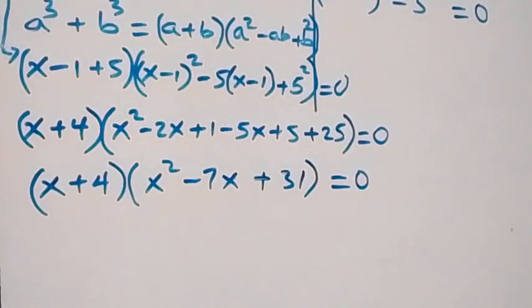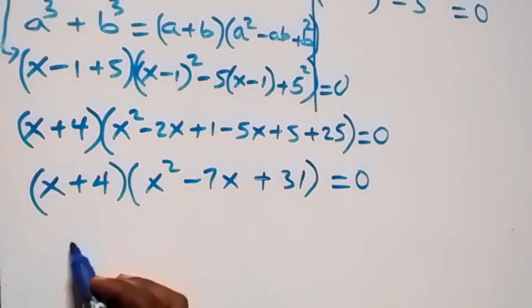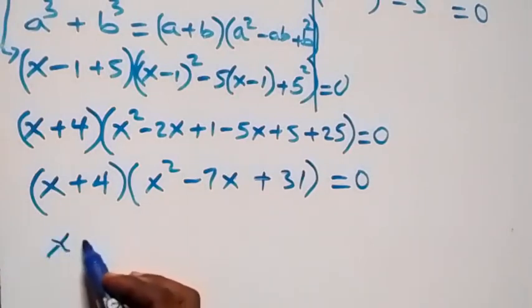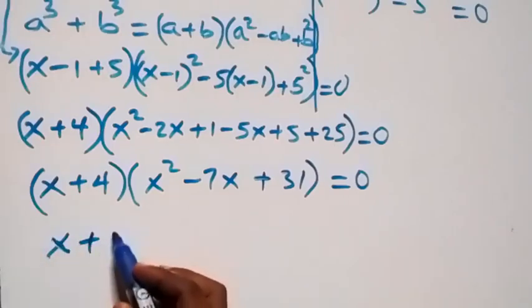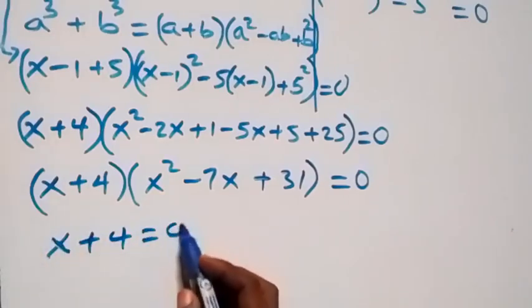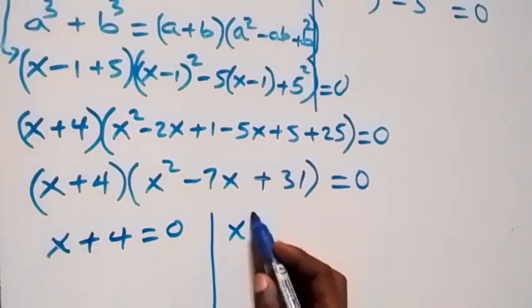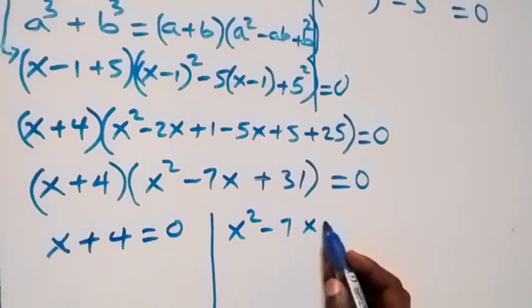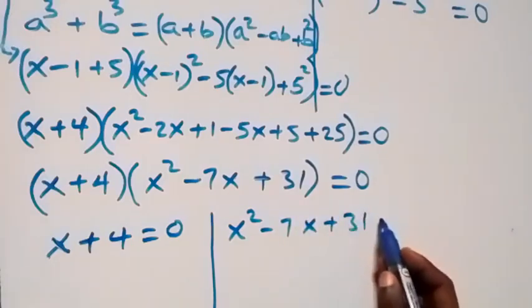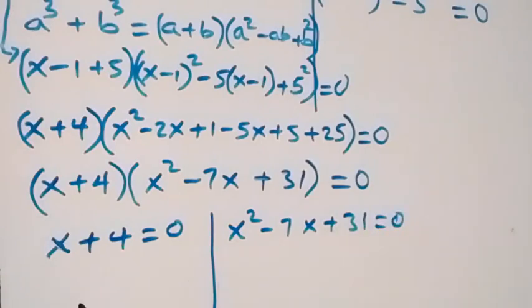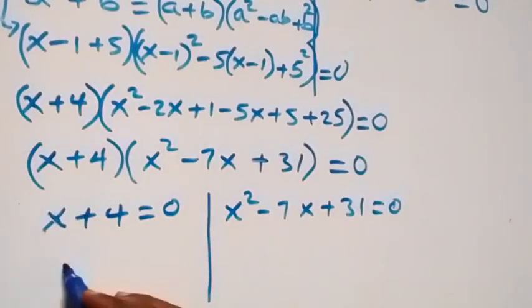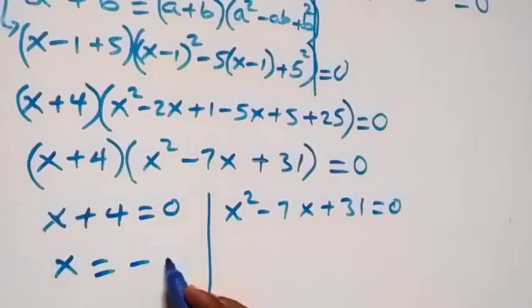From here we have two possible cases: x plus 4 equals to 0, or x squared minus 7x plus 31 equals to 0. From the first, we get x equals minus 4.